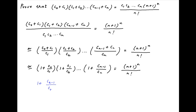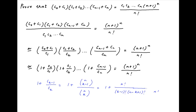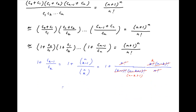Now the general term on the left hand side is equal to 1 plus ck minus 1 upon ck. This is equal to 1 plus n choose k minus 1 upon n choose k, which can be written as 1 plus n factorial divided by k minus 1 factorial times n minus k plus 1 factorial, multiplied by k factorial times n minus k factorial divided by n factorial. After n factorial cancels and the other terms simplify, this results in 1 plus k divided by n minus k plus 1, which is equal to n minus k plus 1 plus k divided by n minus k plus 1, simplifying to n plus 1 divided by n minus k plus 1.